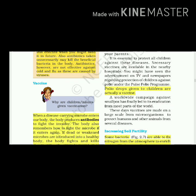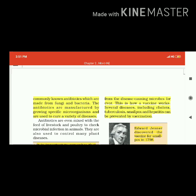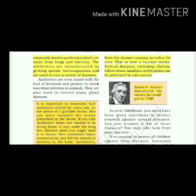When a disease-carrying microbe enters our body, the body produces antibodies to fight the invader. The body also remembers how to fight the microbe if it enters again. If dead or weakened microbes are introduced into a healthy body, the body fights and kills the invading bacteria by producing suitable antibodies. The antibodies remain in the body and we are protected from disease-causing microbes. This is how vaccines work. Several diseases including cholera, tuberculosis, smallpox and hepatitis can be prevented by vaccination.